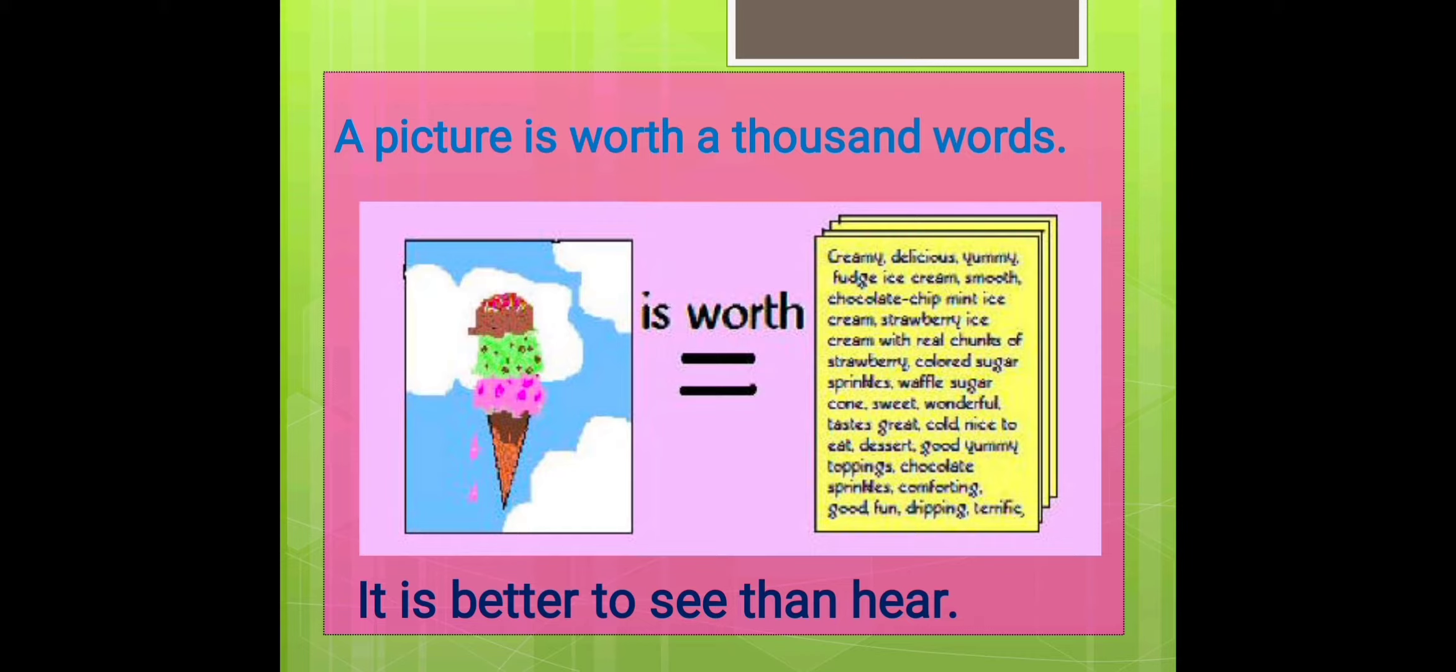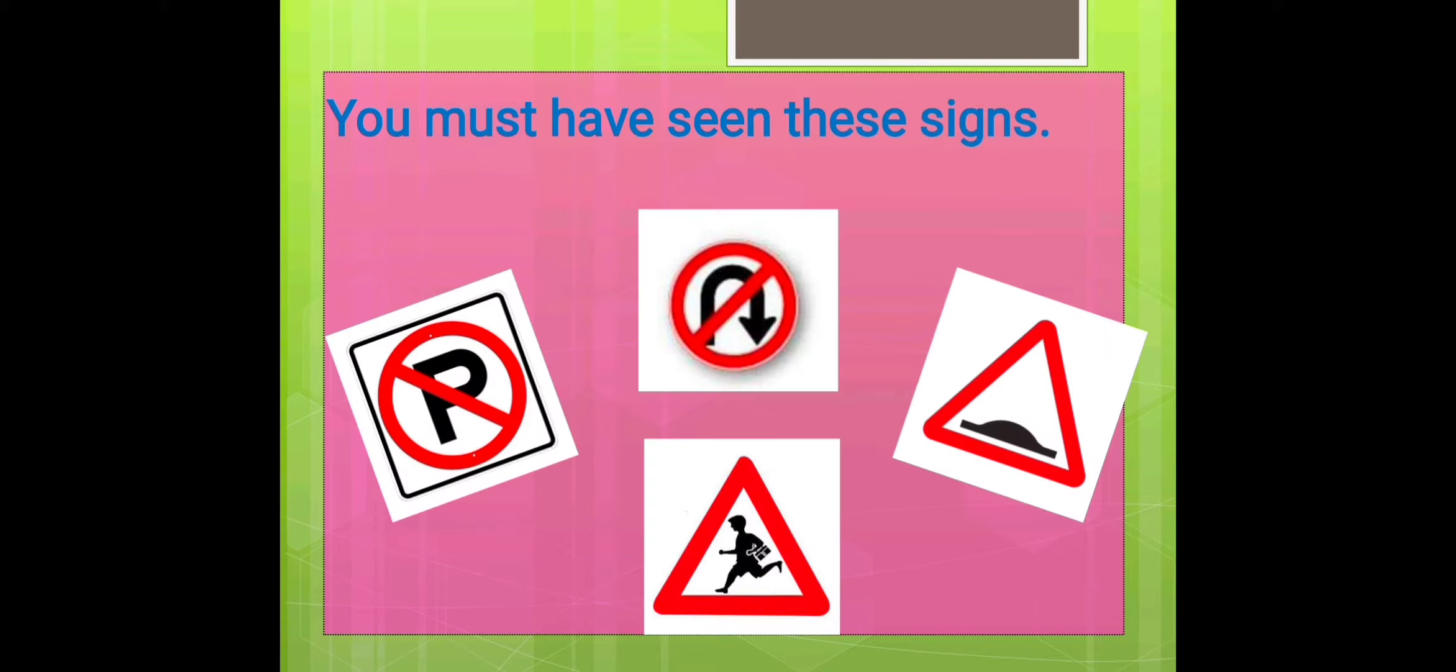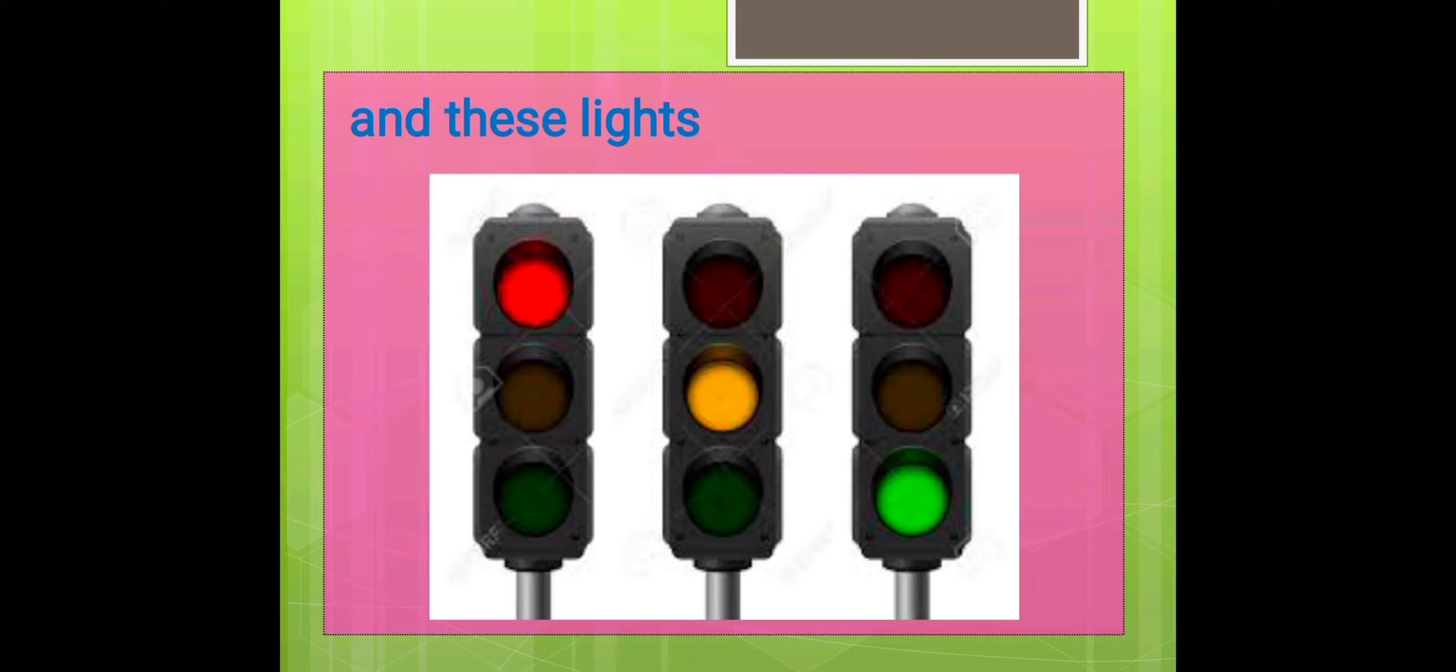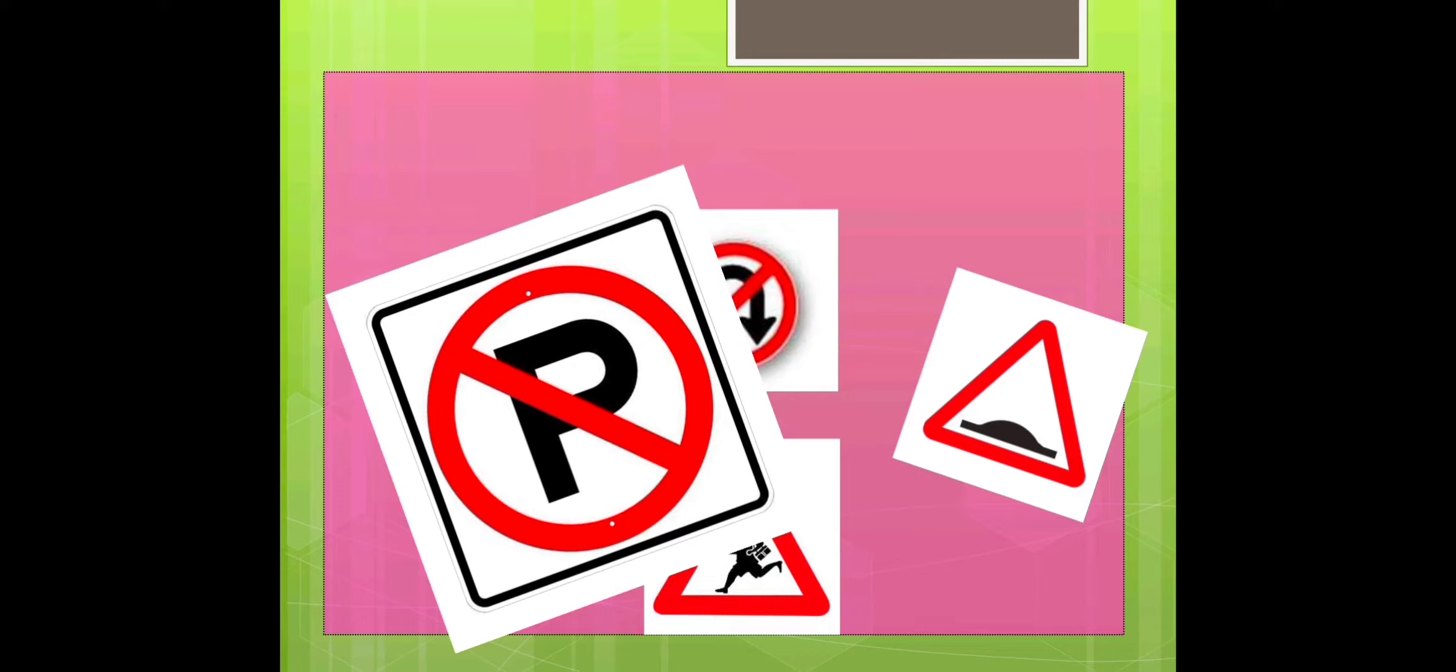Even when your teachers teach you by examples or by showing things, you must have seen these signs. What do they say? Every sign conveys a different thing. Like, there is no parking sign. Whenever we see this sign, we know that parking is not allowed here.